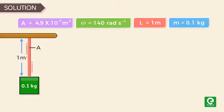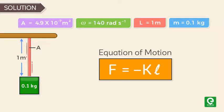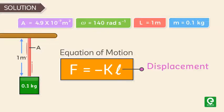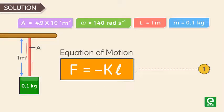If the particle is performing SHM, then equation of motion is given by F = -kℓ, where ℓ is the displacement from mean position and k is SHM constant. Let's call this equation 1.